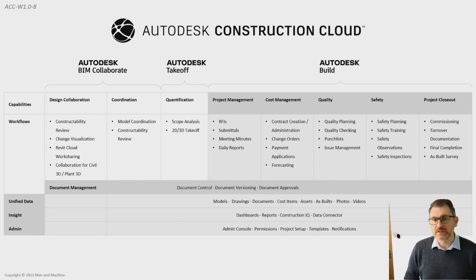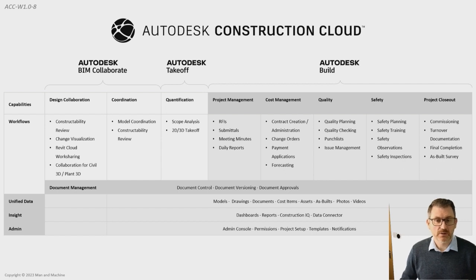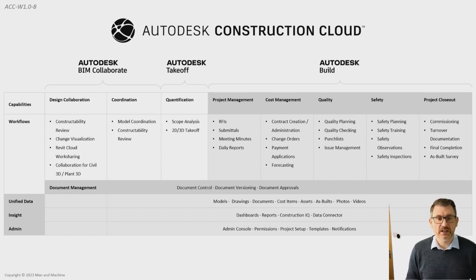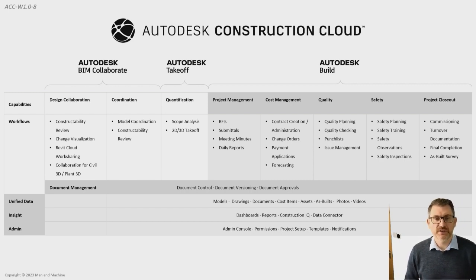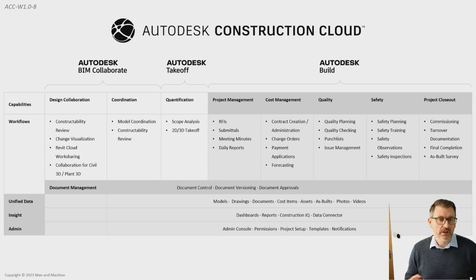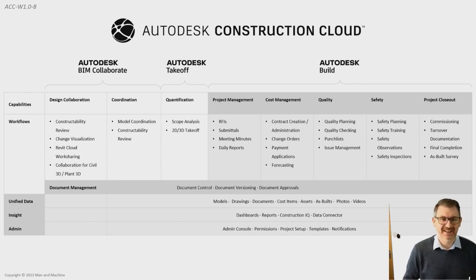Moving on to Takeoff — this is aimed at quantification. We're looking at 2D takeoffs for quantity surveyors and 3D takeoffs using our 3D models. We can utilise a model created in Revit and share it with the QS team so they can look at quantity takeoffs — for example, how many doors and windows are in an architecture model and what sizes they are. We can also look at 2D drawings for linear and area takeoffs. Because all information is stored in one environment, any changes can be updated appropriately.